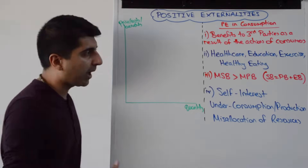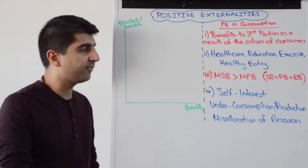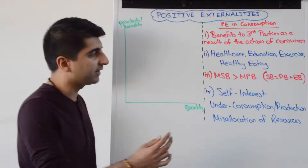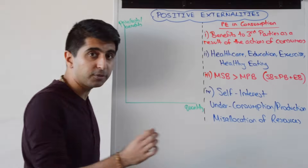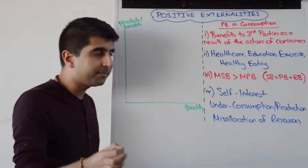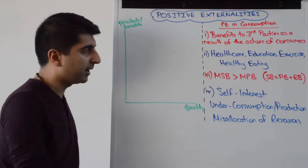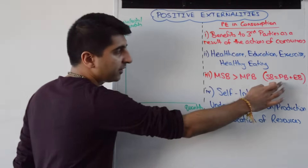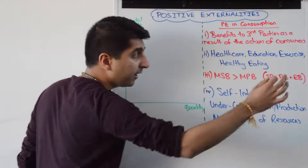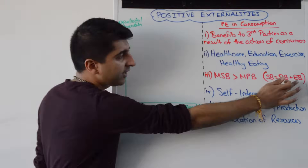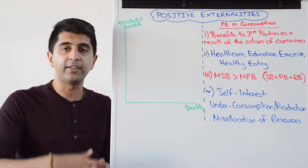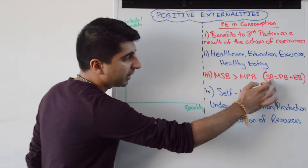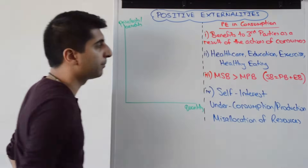On a diagram, how do we show the impact of positive externalities in consumption? Well, the impact is in consumption. So marginal social benefit is going to be higher than marginal private benefit, because of this equation for social benefit: social benefit equals private benefit plus any external benefits, and here the external benefits are positive. There are positive impacts on third parties, so that would mean that social benefit is greater than private benefit.